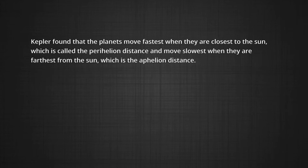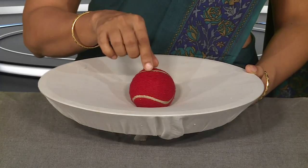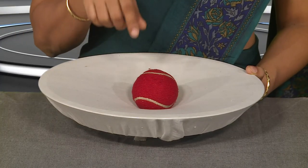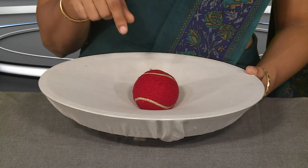Kepler found that the planets move fastest when they are closest to the sun, which is called the perihelion distance, and move slowest when they are farthest from the sun, which is the aphelion distance. This arrangement here will demonstrate this particular fact. I have a deep dish over which I have put a cloth.